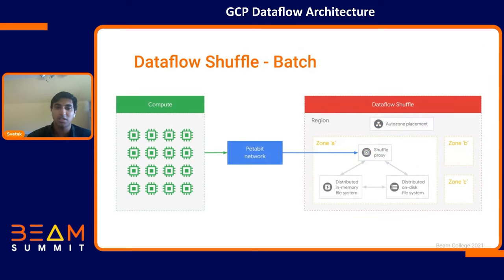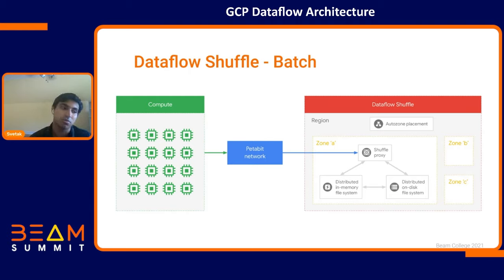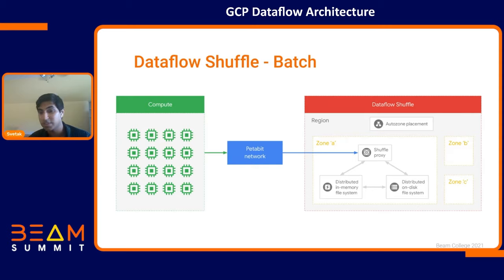The Dataflow shuffle service is used for batch jobs. If you have a heavy operation in your pipeline such as GroupBy, CoGroupBy, or Combine, the shuffle service offloads that operation — carries it out, then sends the result back so the pipeline continues executing normally. Benefits include faster job completion time, more efficient CPU and resource utilization, and more efficient use of autoscaling.